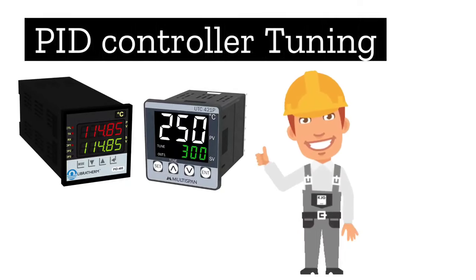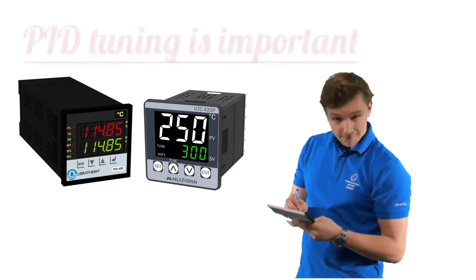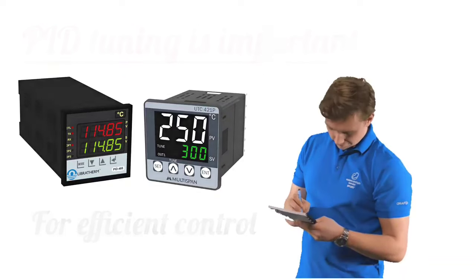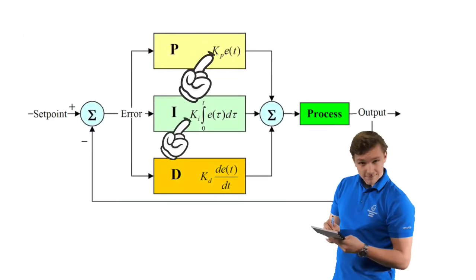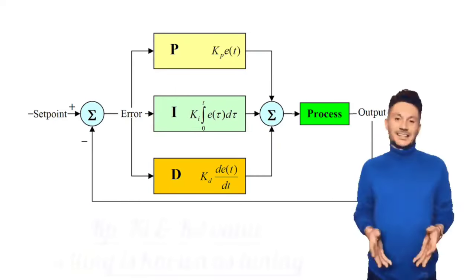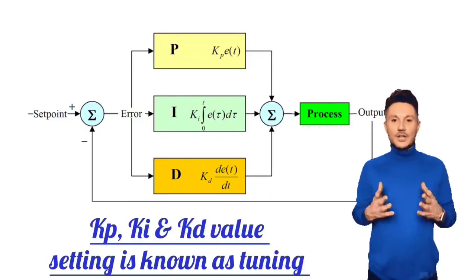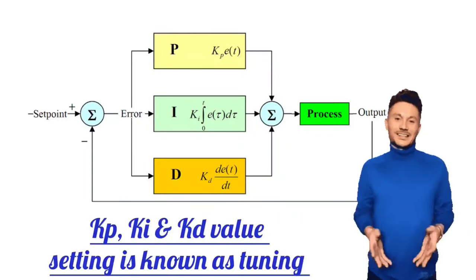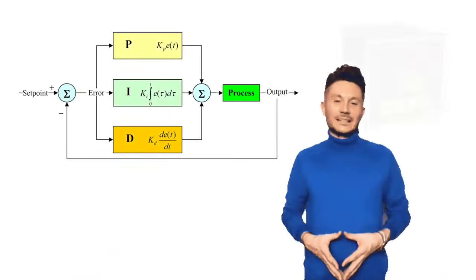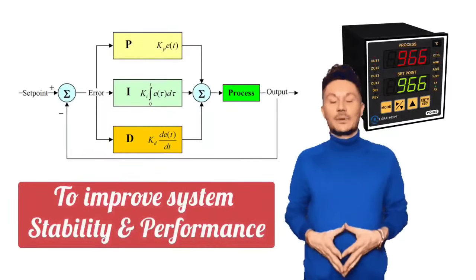Now, let's discuss PID tuning. PID tuning is very important for an efficient control. In PID tuning, the KP, KI, and KD values have to be set correctly. Meaning, setting the values of KP, KI, and KD is the tuning of the PID controller, so that system stability and performance should improve.